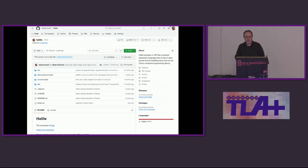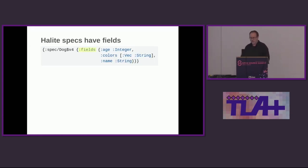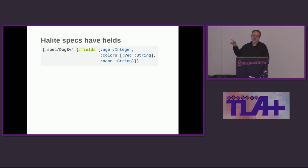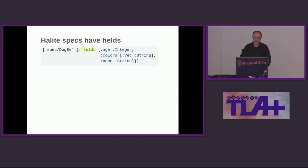Halite is a Clojure library. Clojure, if you're not familiar, is a Lisp that runs on the JVM. So Halite is just a library in Clojure. A quick intro to some of the Halite syntax — it's all done in Clojure syntax. The curly brackets are associative arrays, so key-value pairs. And the colon-foo, that's a Clojure keyword — a symbol that evaluates to itself, commonly used as keys in maps.